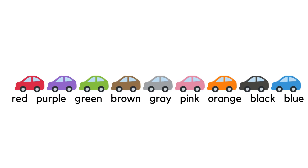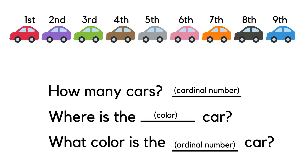Here's a quick review of color names: red, purple, green, brown, gray, pink, orange, black, blue. Now let's practice — how many cars are there? That means we're counting the number of cars, so we need a cardinal number. We have nine cars.